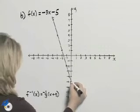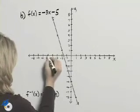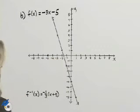So for example this point 0, negative 5 would become negative 5, 0 for the inverse.